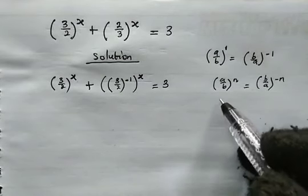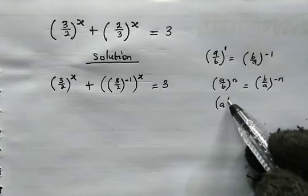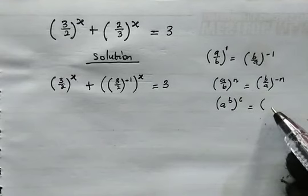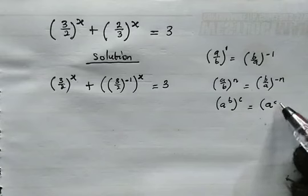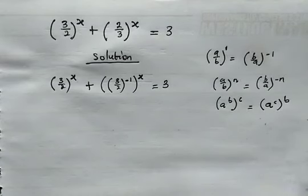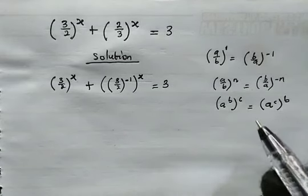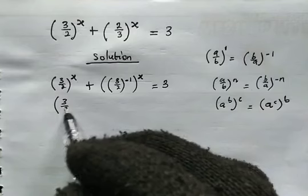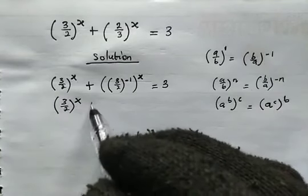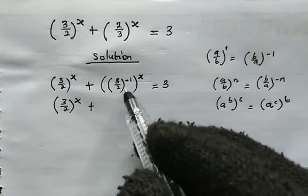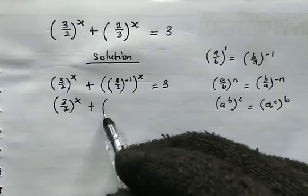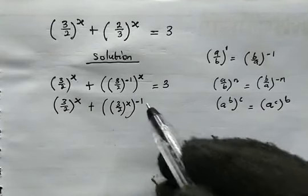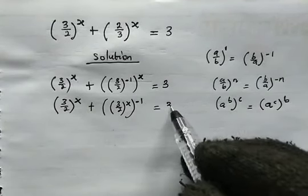Let us make use of this property: when we have a to the power of b, raised to the power of c, we can interchange the powers as a to the power of c, raised to the power of b. So from here, we have 3 over 2 to the power of x, plus 3 over 2 to the power of x, then raised to the power of negative 1. This is equal to 3.